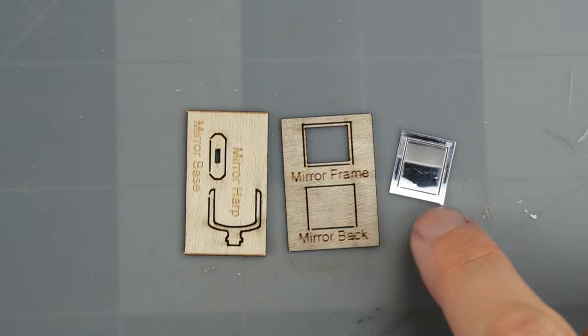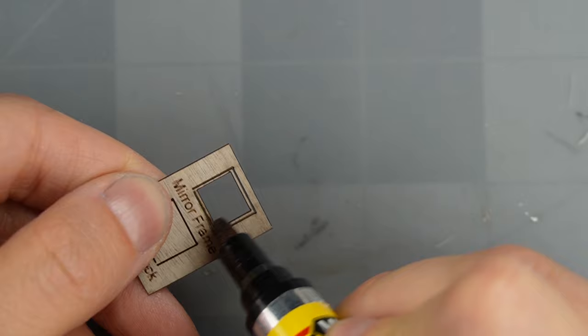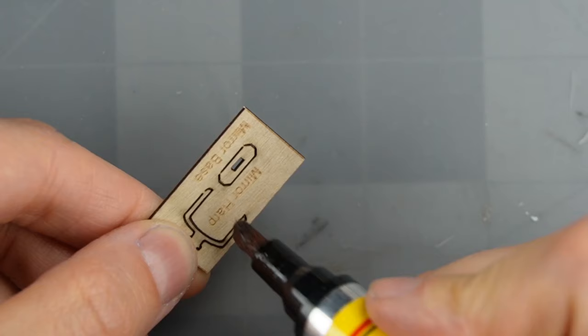For the last bit of laser cut decor, I'm making this mirror. This is my favorite type of project to use the stain pen on because the pieces are really tiny, and I can easily stain them in place without any risk of the pieces warping.